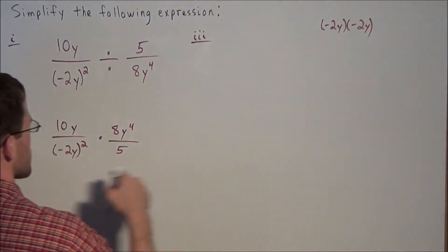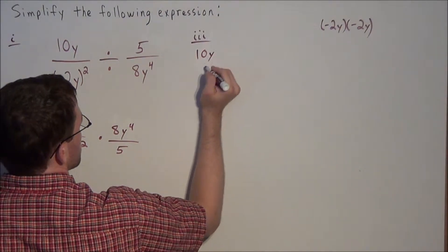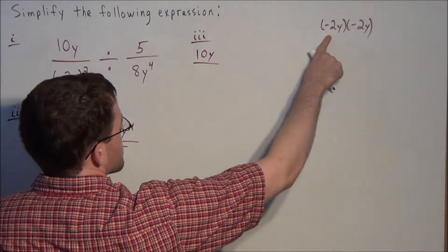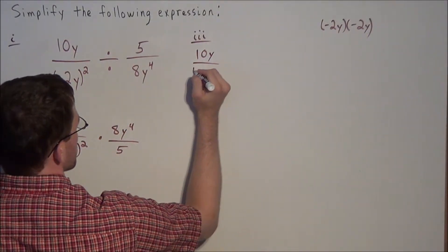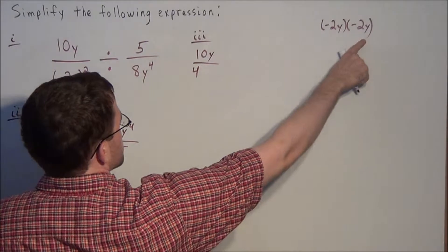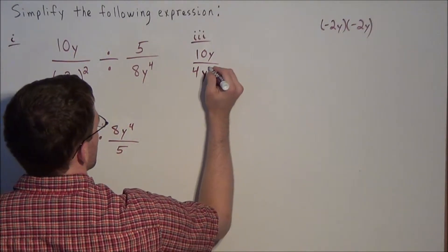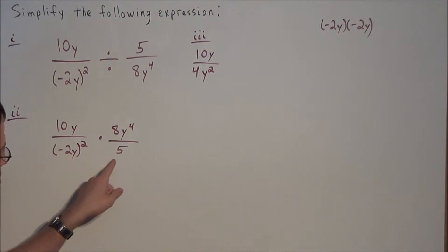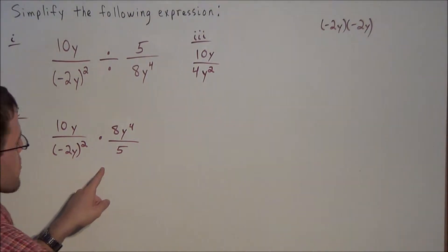So for the next line we have 10y over — negative 2 times negative 2 is positive 4, and y times y is y squared — times 8y to the 4th over 5.